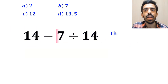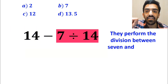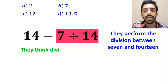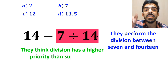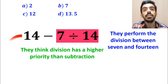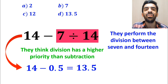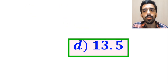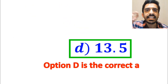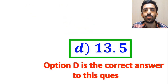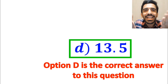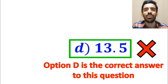In the final step, they perform the division between 7 and 14, because they think division has a higher priority than subtraction. So they simplify this expression to 14 minus 0.5, which ultimately gives them the answer 13.5. And immediately they conclude that option D is the correct answer. But I have to say, we're tricked — it's not the correct answer to this question.